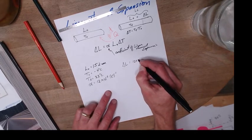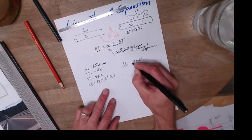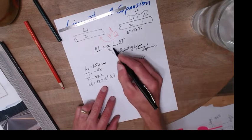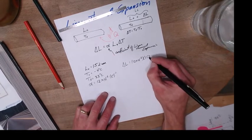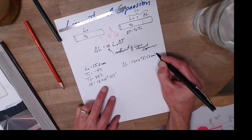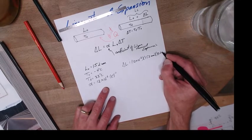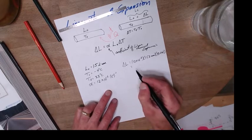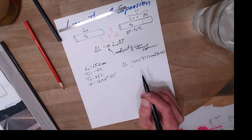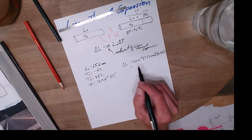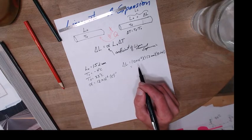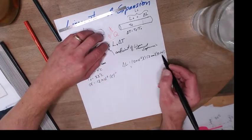So I'm going to have 12 times 10 to the minus 6 times L initial, which is 152 millimeters, times my delta T, which is 33 minus negative 4. All right, I didn't actually, let's see if I can figure this out real quick.